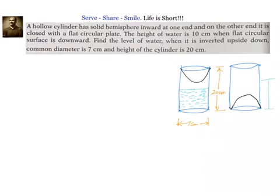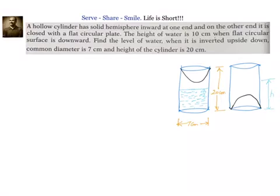We do not know this height — we have to find out what this height equals. Now, how to solve this problem? What we will do first is try to find out what is the volume of water when the flat surface is down, because that volume of water will be the same in the second scenario also. So, let us go ahead and first write down and try to find out what is the volume of water.